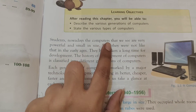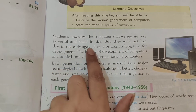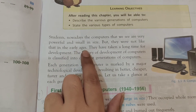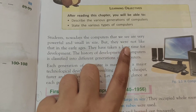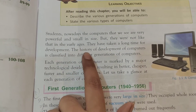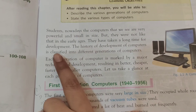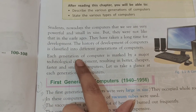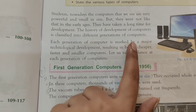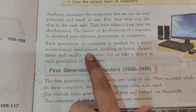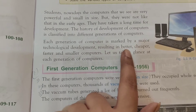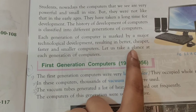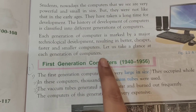Nowadays the computers that we see are very powerful and small in size, but they were not like that in the early ages. They have taken a long time for development. The history of development of computers is classified into different generations. Each generation of computer is marked by a major technological development, resulting in better, cheaper, faster and smaller computers. Let us take a glance at each generation of computers.